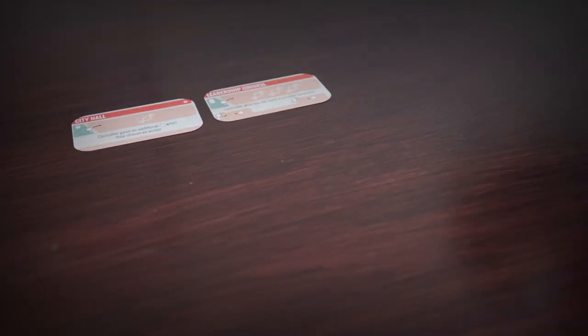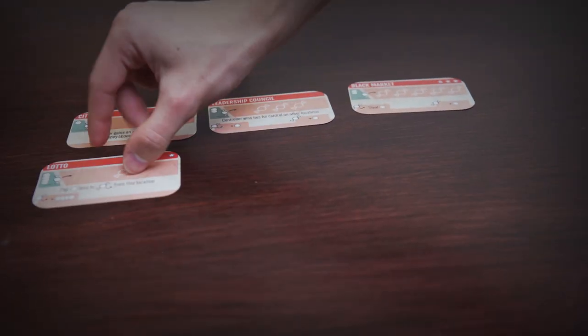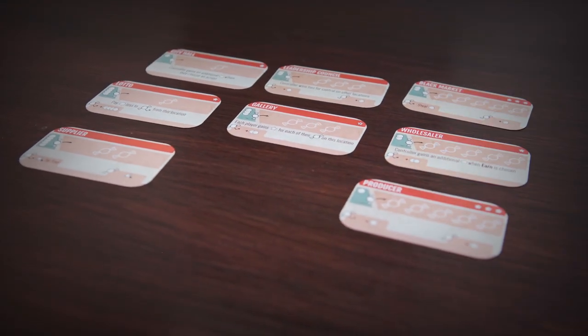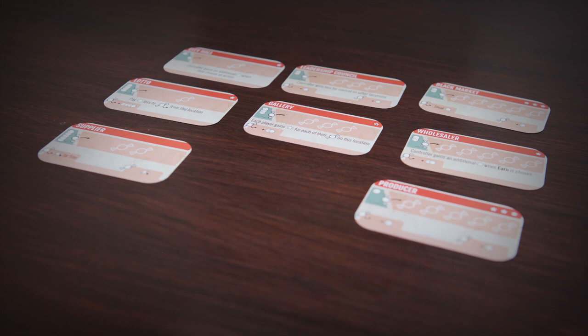First, shuffle the location cards and randomly add locations to the game area until there are at least five influence token spaces per player. Put the remaining location cards off to the side. They will not be used in this game.